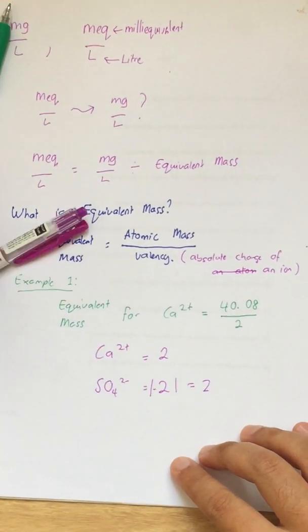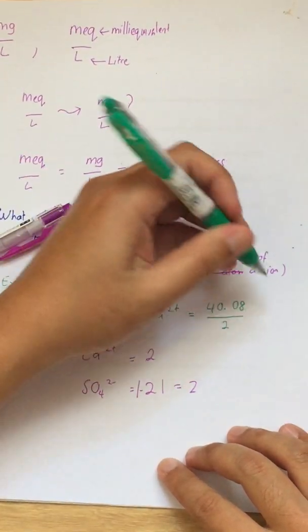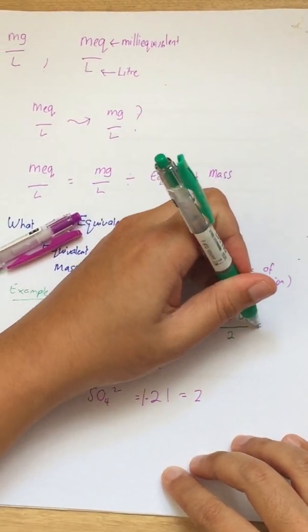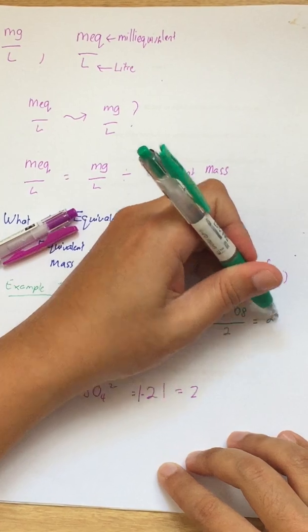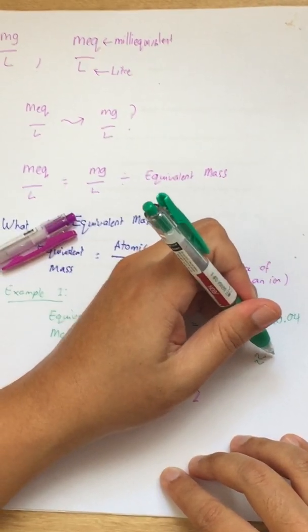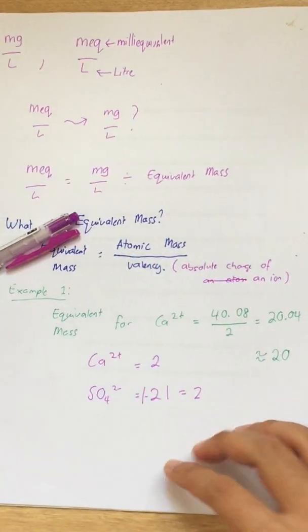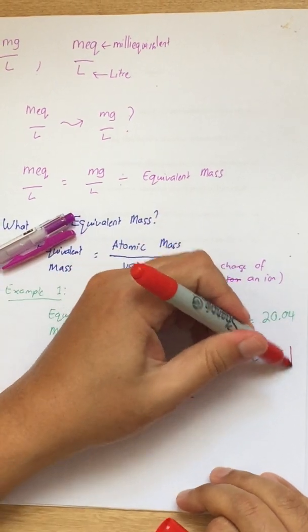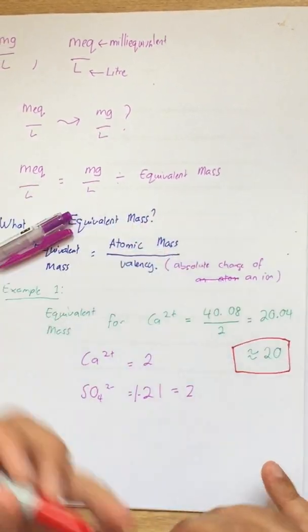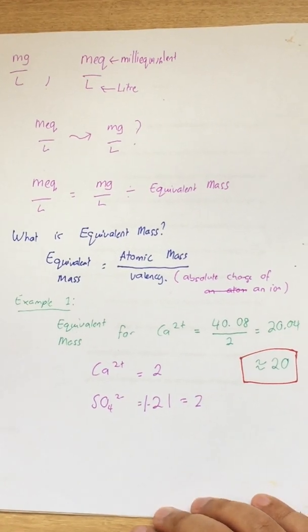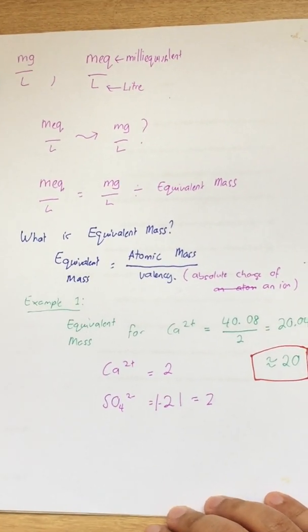Now the equivalent mass for calcium is 40.08 divided by 2 which is equivalent to 20.04. So if you'd like to round up, the number is 20 or the answer is 20. That is the answer you are looking for, for example one. Thank you.